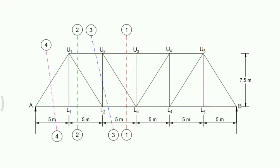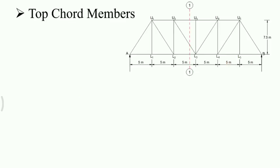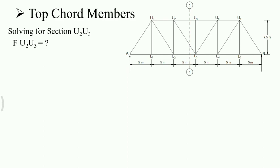Starting with section 1-1, which cuts top chord member U2U3, diagonal member U2L3, and bottom chord member L2L3. To find forces in member U2U3, we draw an influence line diagram. We determine ordinates at either end of the span and at either side of the section cut. We place the unit load first on the left-hand side of section 1-1, then on the right-hand side.